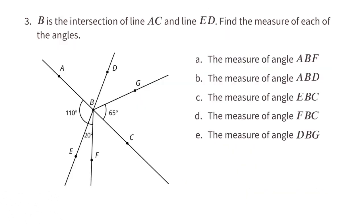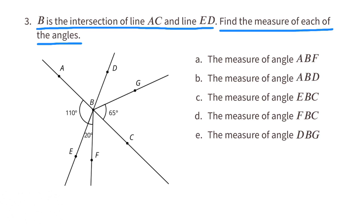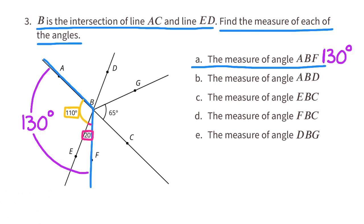Problem number 3. B is the intersection of line AC and line ED. Find the measure of each angle. A: the measure of angle ABF. We're told that angle ABE is 110 degrees and angle EBF is 20 degrees. Adding those together, angle ABF is 130 degrees.